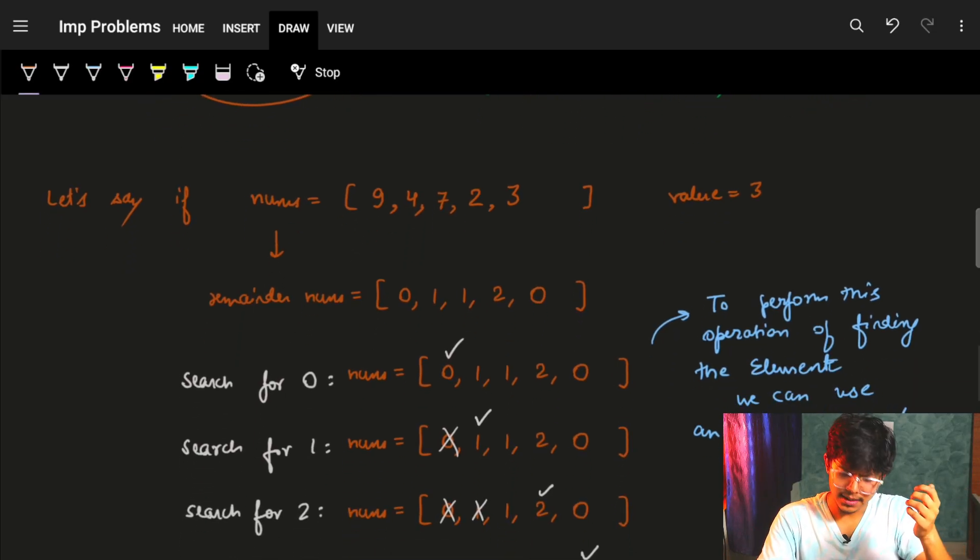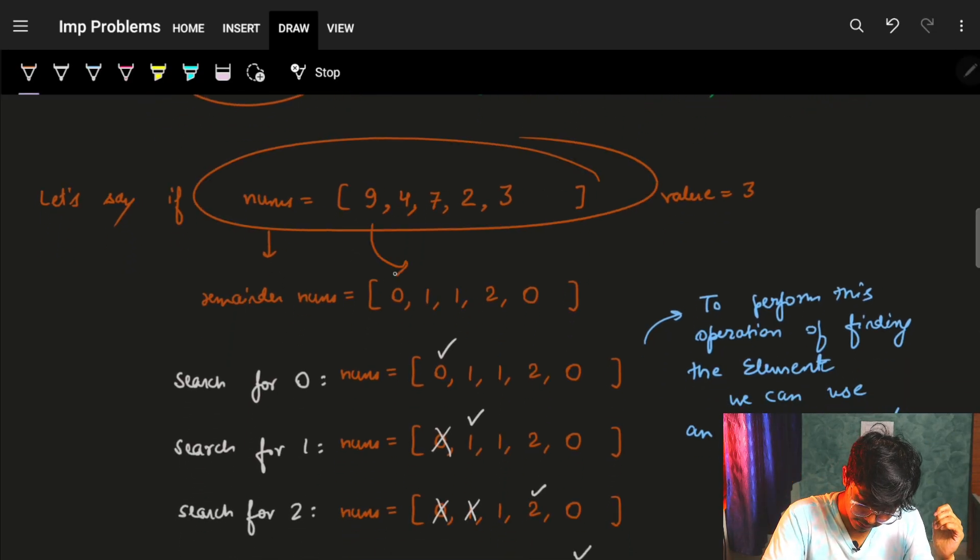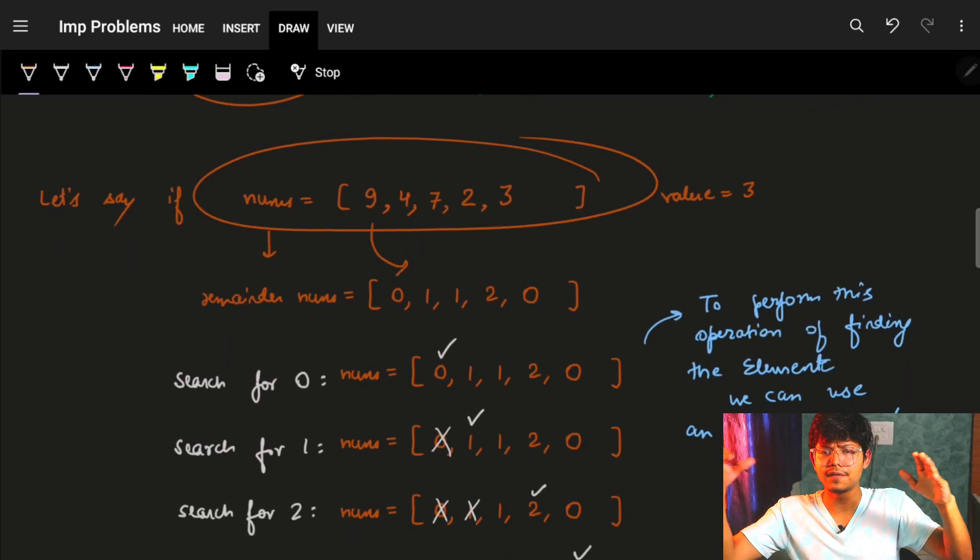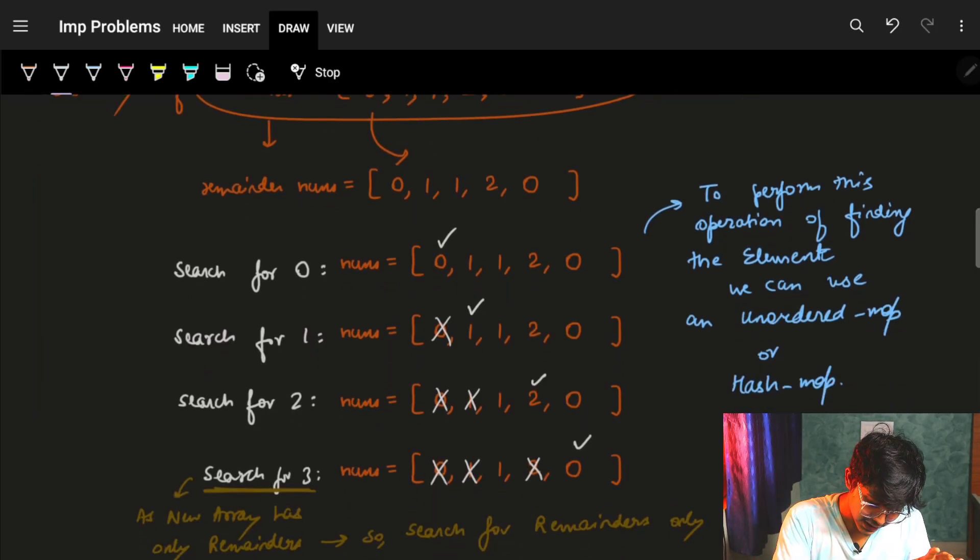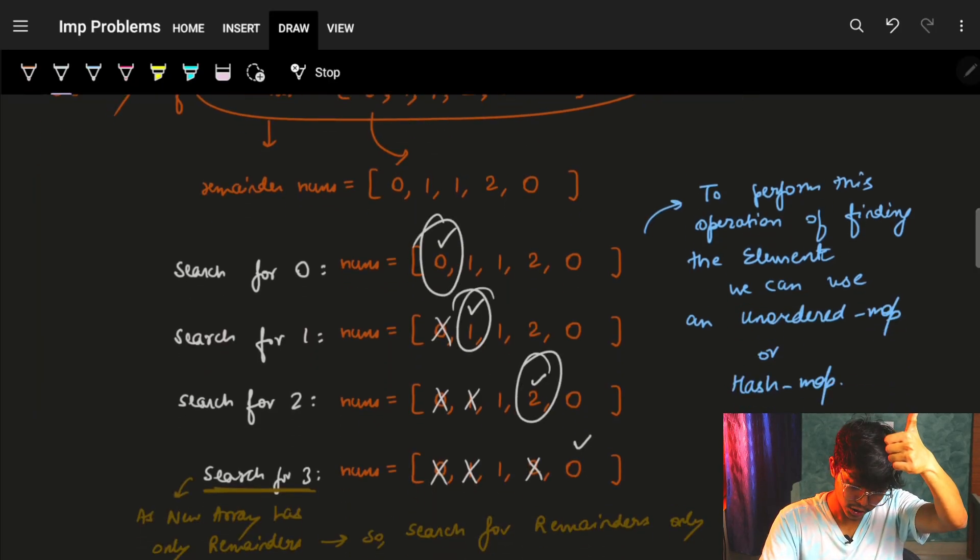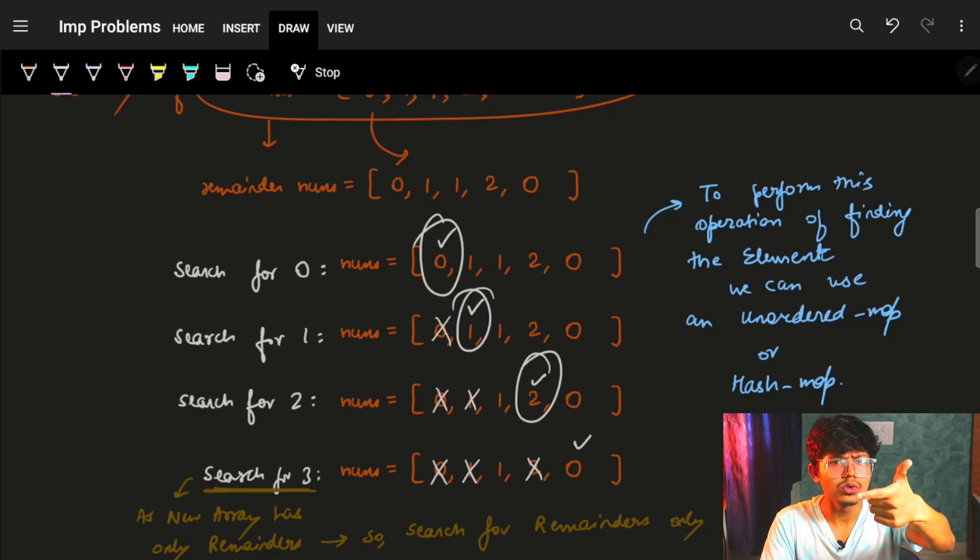But let's see another example. If we had this example, we brought every number down to their minimum value, which is 0, 1, 1, 2, 0. Then I'll just grab this number. I got 0, got 1, got 2. 3, no, 3 is not there.